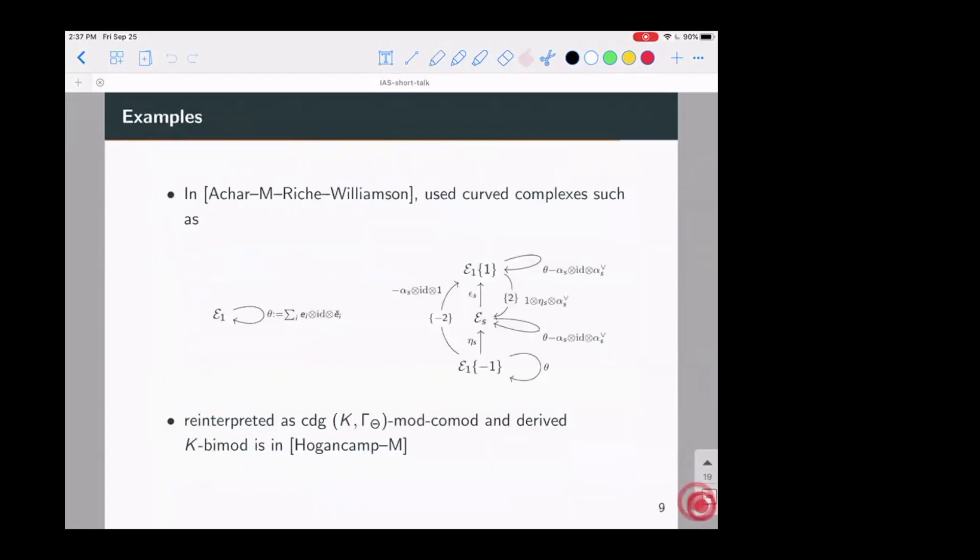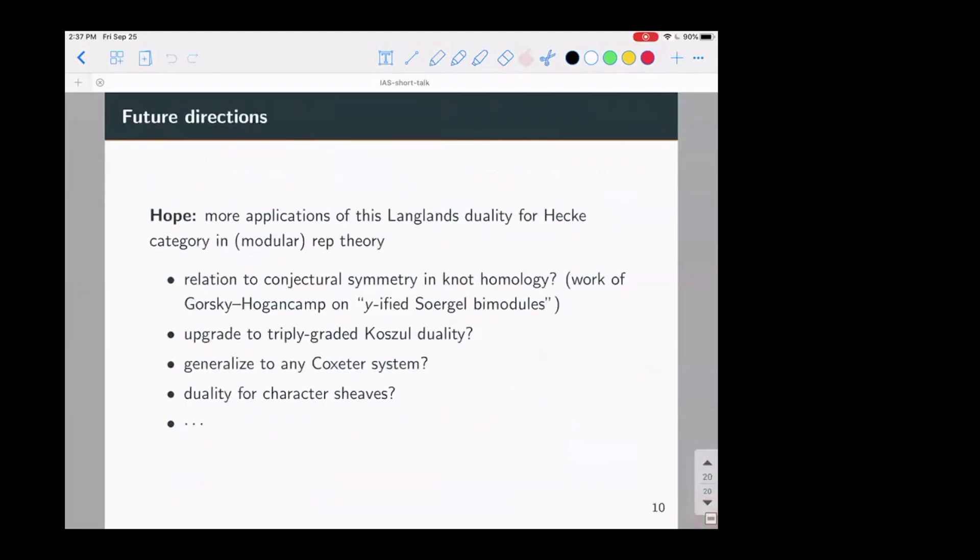I mean, I'm hoping to try to connect it to character sheaves. But in what, in what way, so what do you hope is? Yes. So it seems like this K-by global by module. So, of course, the Hogancamp should be related to character sheaves. But I, so I don't know how this will go yet. It's something that I'm trying to figure out. I hope to figure out this year.